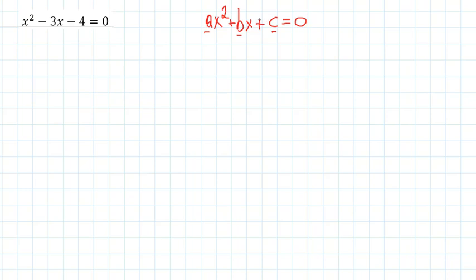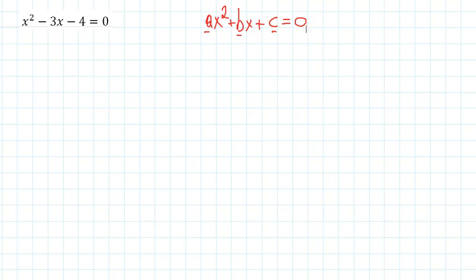We have two models of the quadrat. If we have a quadrat: b, c.